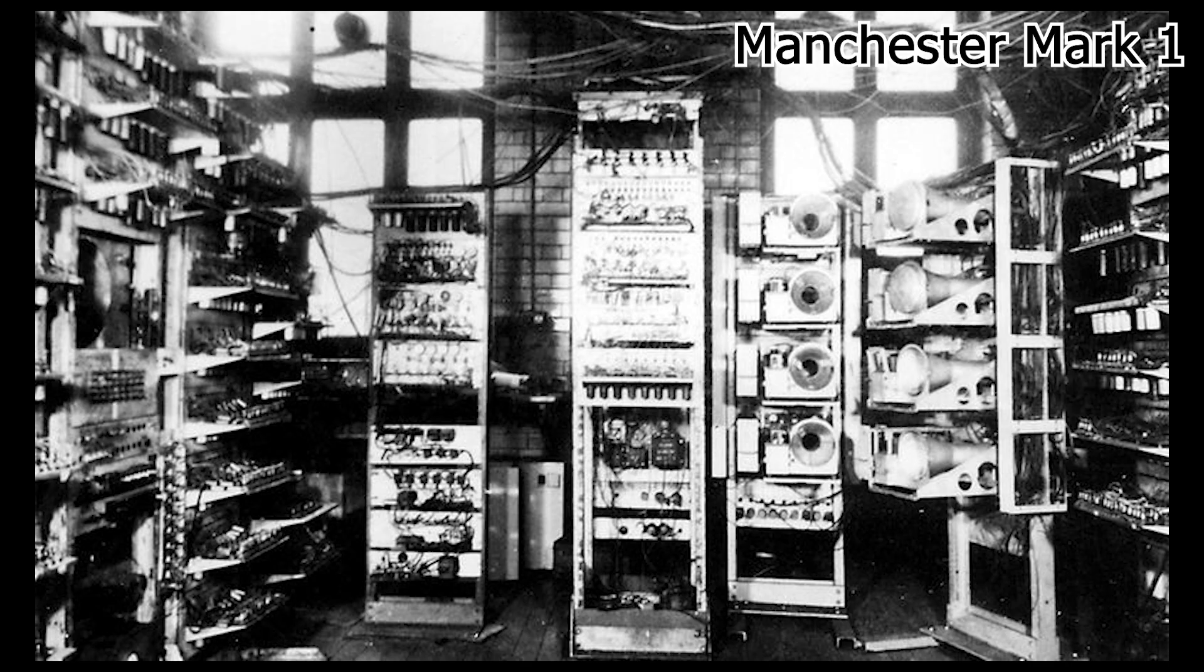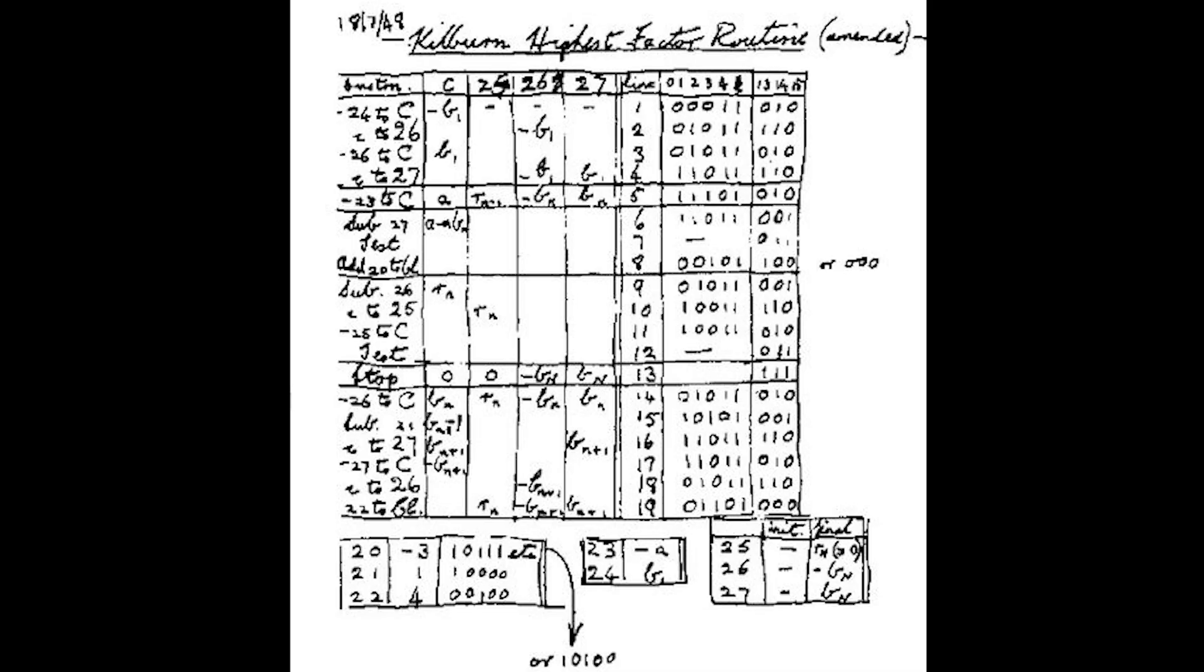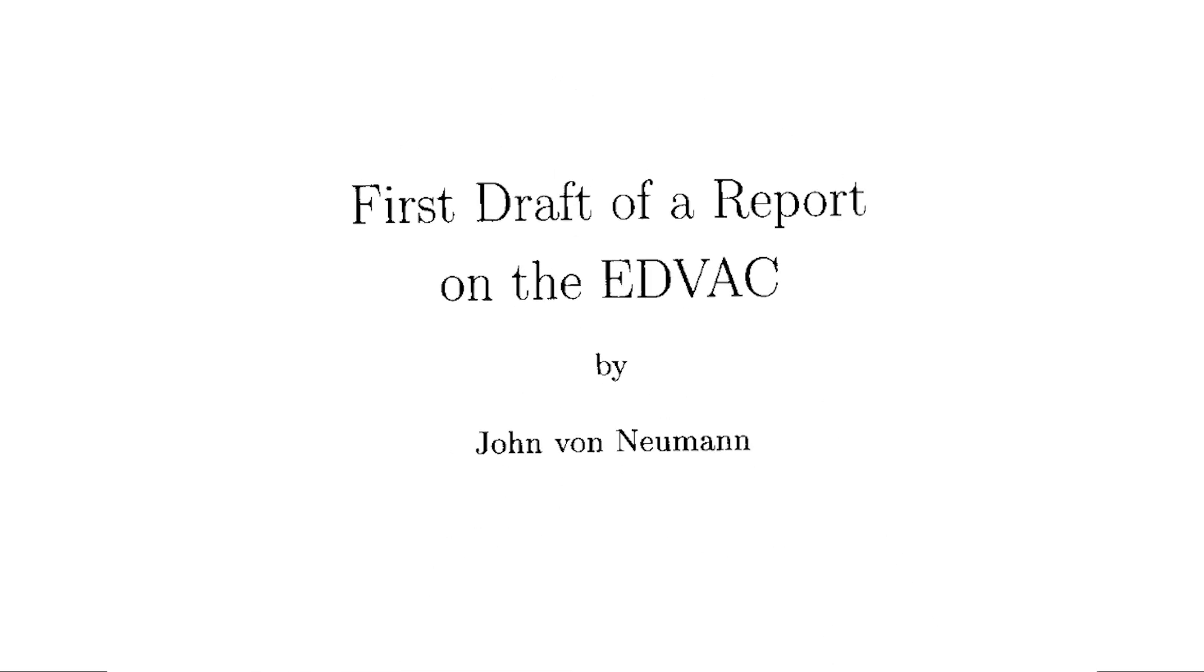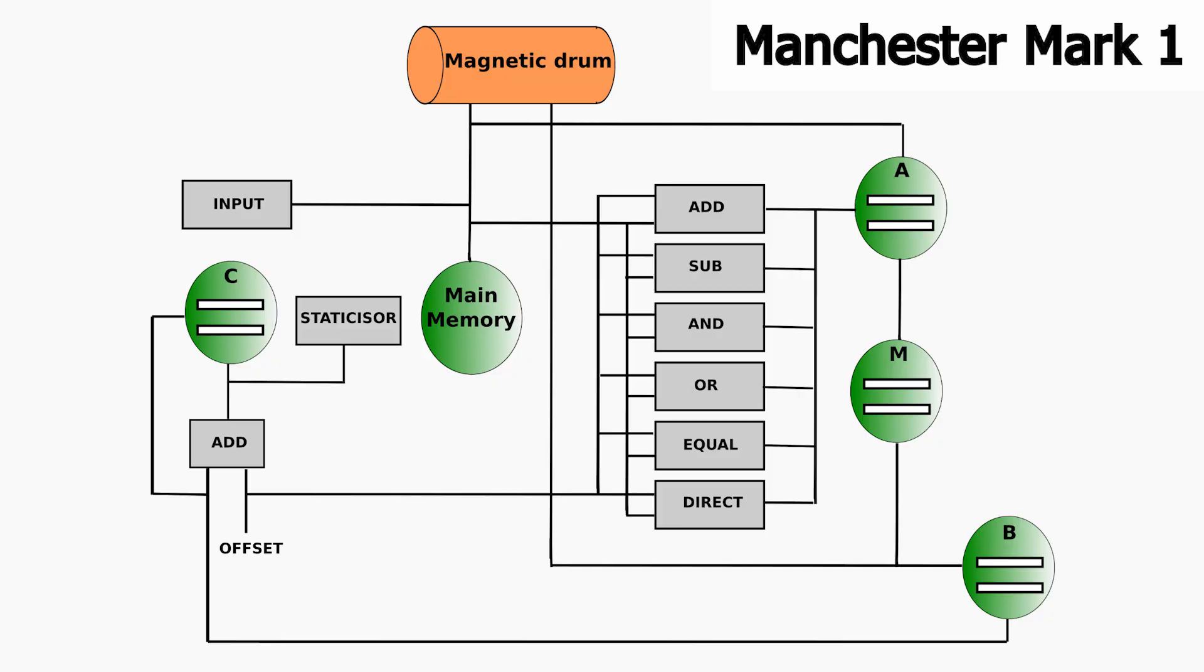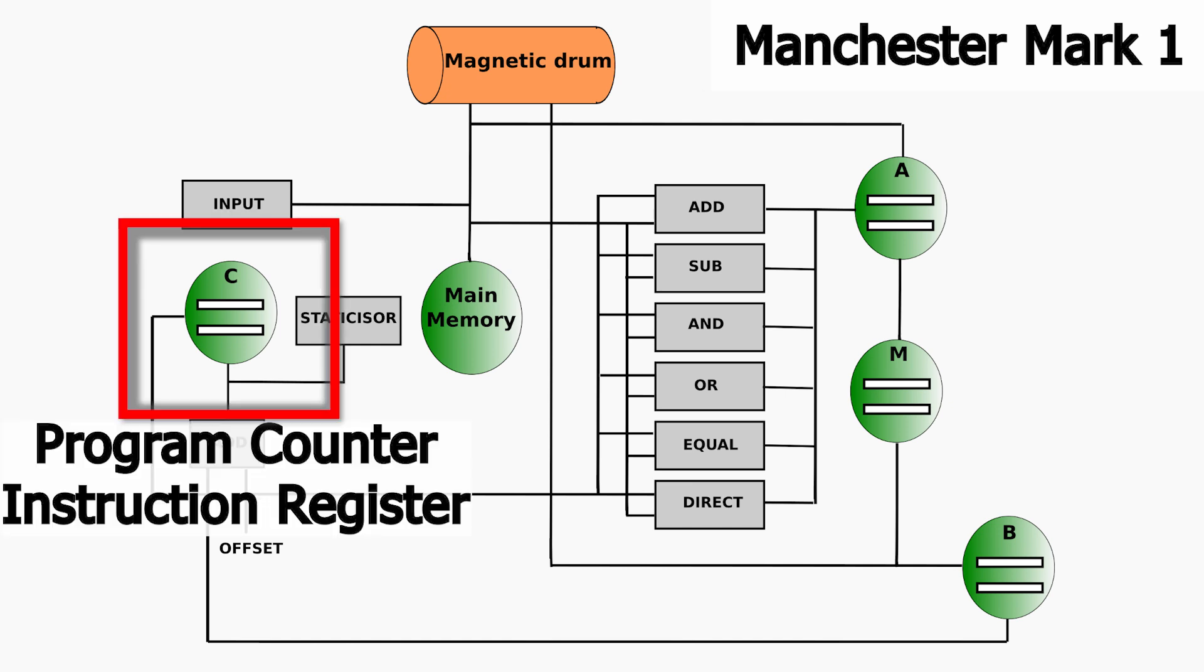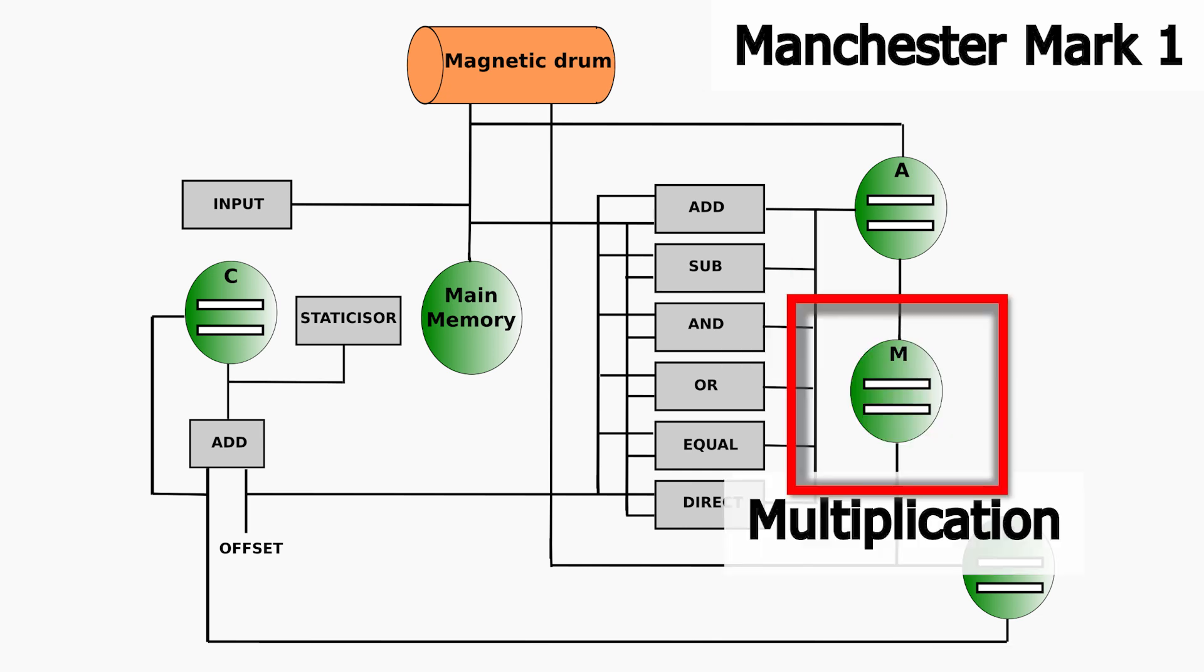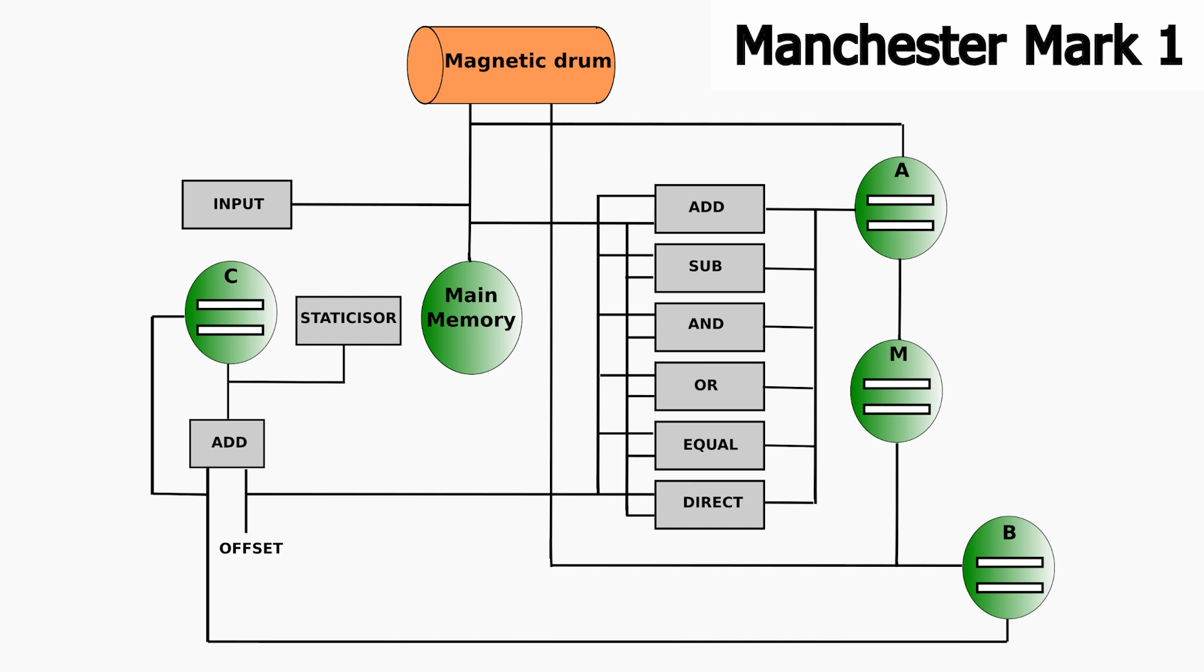One of the first computers with random access memory was the Manchester Mark 1, which was designed by Frederick Williams, Tom Kilburn and Jeff Toodle. But Alan Turing worked on the software side. It was one of the first operational stored program computers, designed along the principles described by John von Neumann in his famous first draft paper. It used cathode ray tubes for both main memory and for storing the contents of the various registers. Here, Tube C is for the program counter and instruction register. A is the accumulator, and B contains the index registers. M is for multiplication.